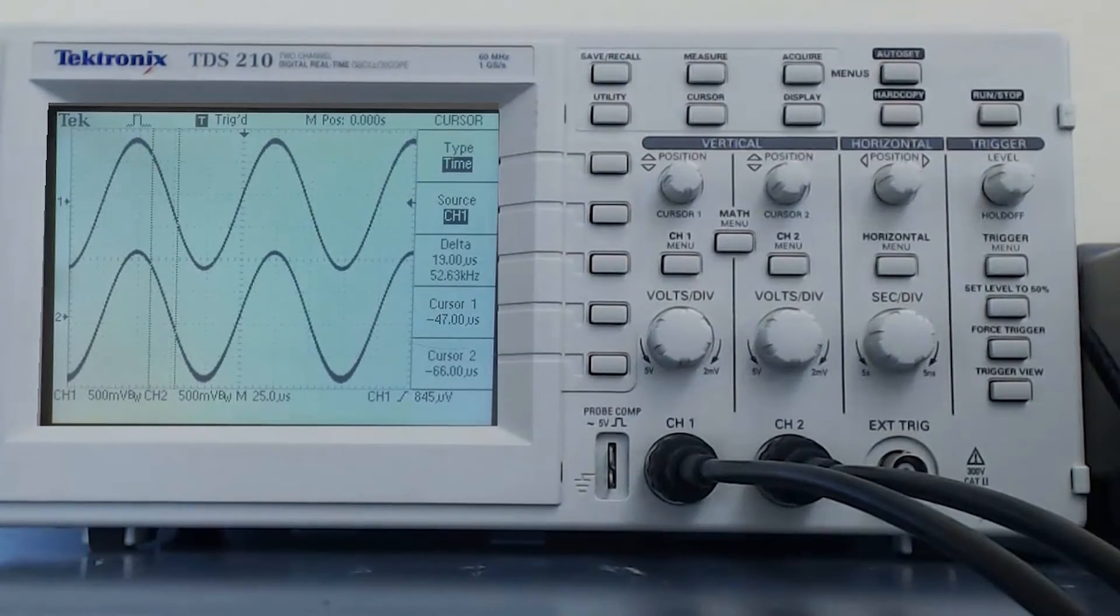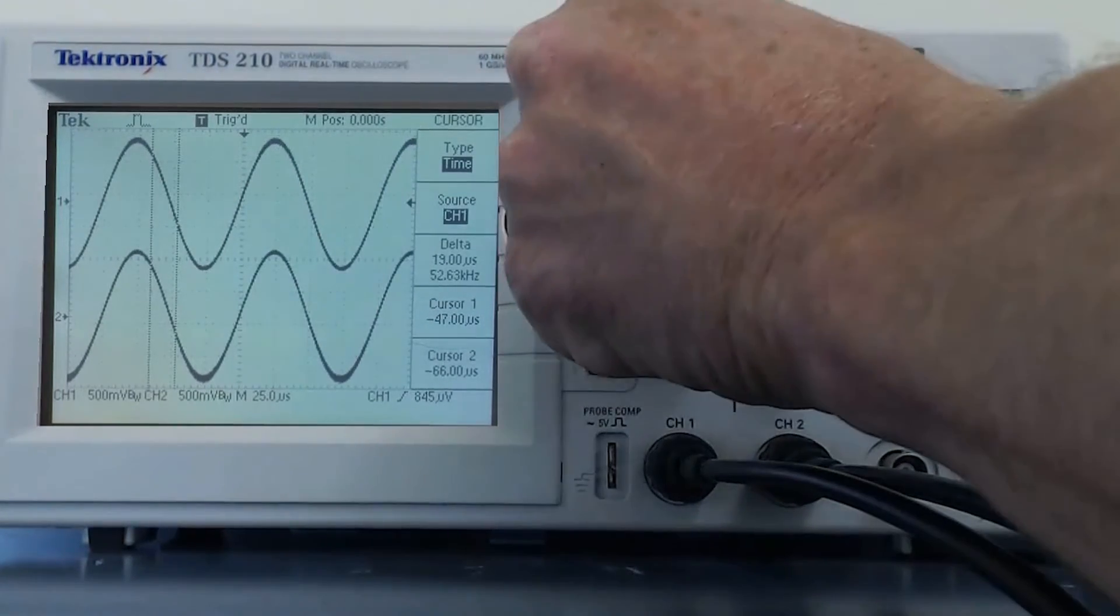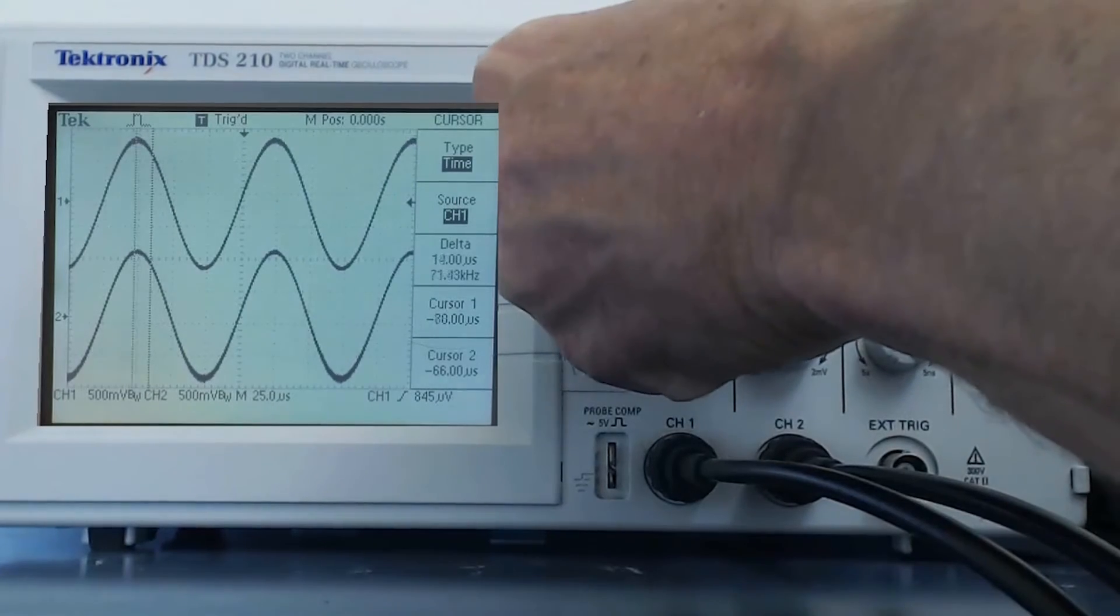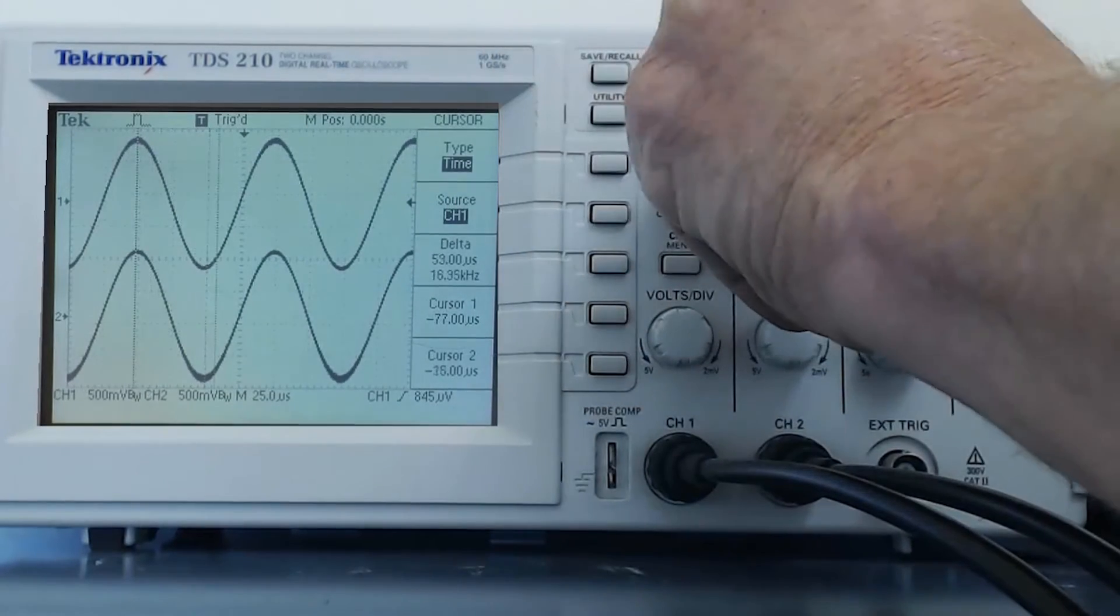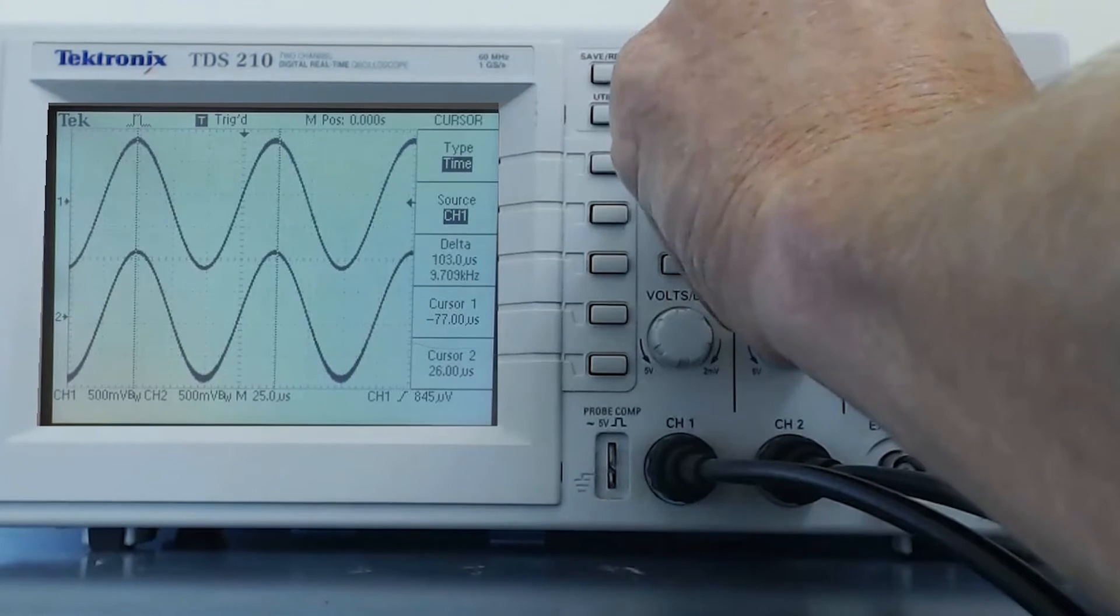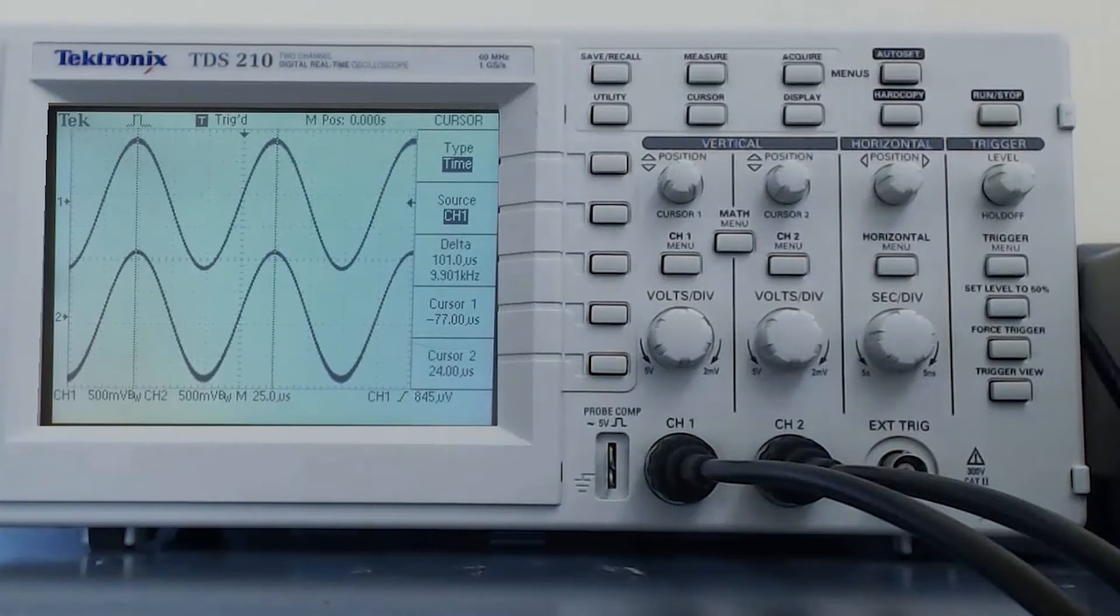I can, for example, position the cursors on two subsequent peaks of a signal waveform. And in the delta section of the display, the difference between those two time cursors are shown along with the frequency that corresponds to that period.